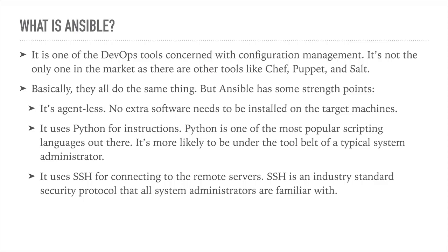The third strength point is that Ansible uses SSH for connectivity to remote servers. SSH is the de facto standard security protocol used by system administrators to connect to Linux and Unix hosts. It is the most common way of connecting to remote hosts, and Ansible uses the existing connection and existing infrastructure to start working. So it is going to use SSH which is already used in your environment — the industry standard security protocol — with no need to use anything unknown or new to your security team.